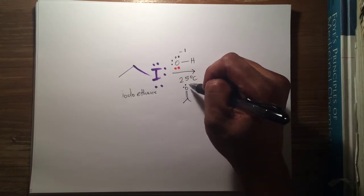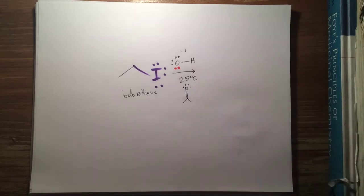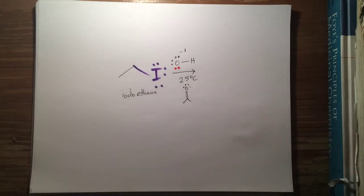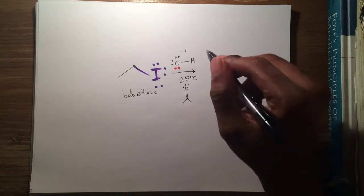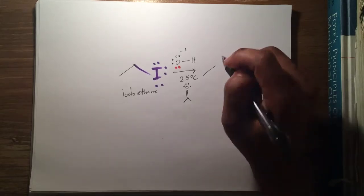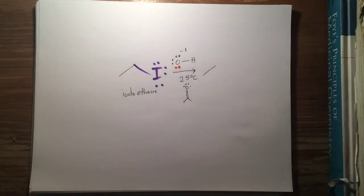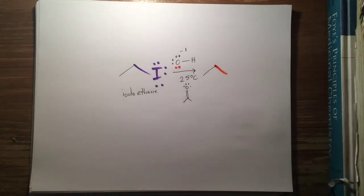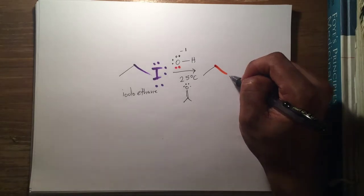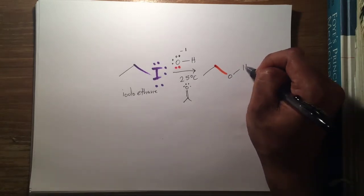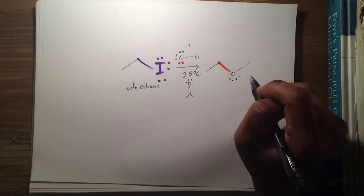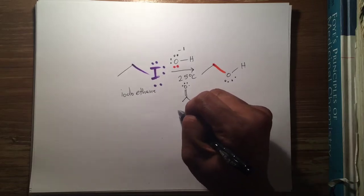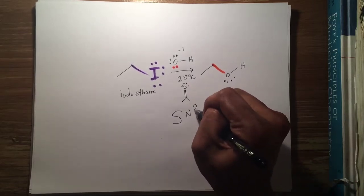We're going to talk about why we use acetone. Once we mix these two molecules together in acetone at 25 degrees Celsius — maybe for 20, 30, 40 minutes, who knows — hopefully we can get this molecule right here produced. We're going to prove beyond reasonable doubt that this molecule could actually be produced from these conditions, and that all these conditions favor an SN2 reaction.